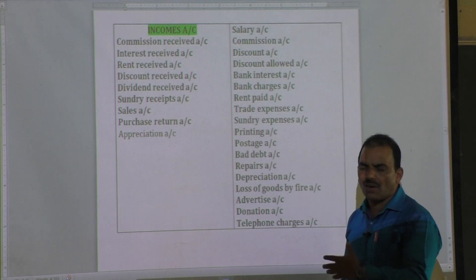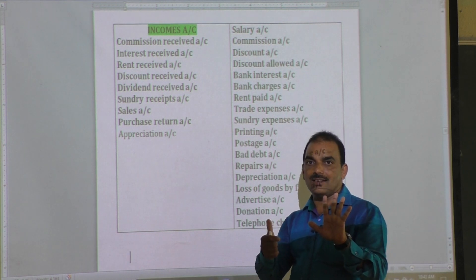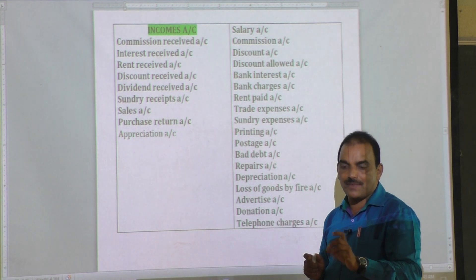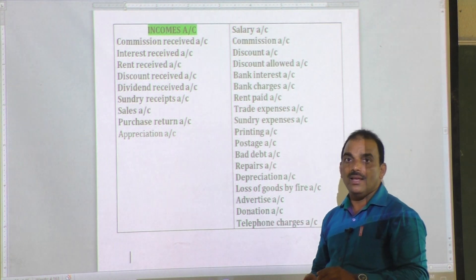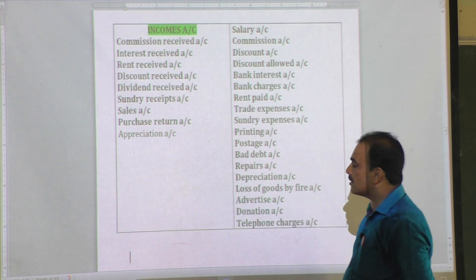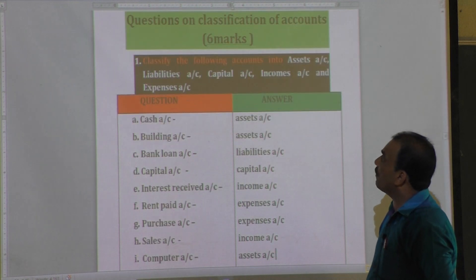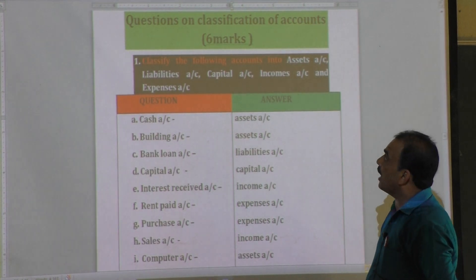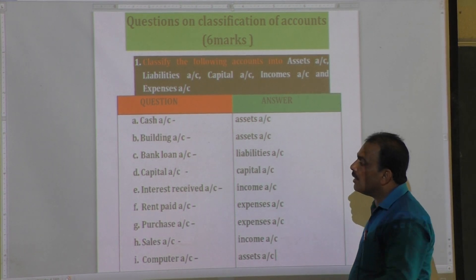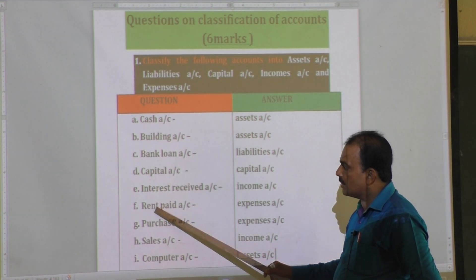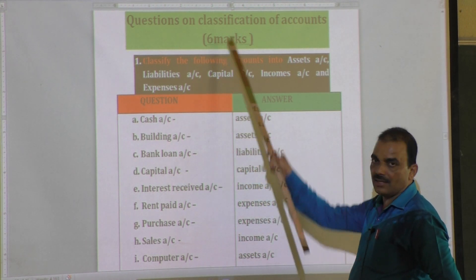We studied the list of examples for five types of accounts. Based on these examples, one important six-mark topic is identification of accounts. You are provided with twelve accounts and you have to identify each one. The question reads: classify the following accounts into asset account, liability account, capital account, income account, and expense account. Each item carries half a mark — twelve items, six marks total.